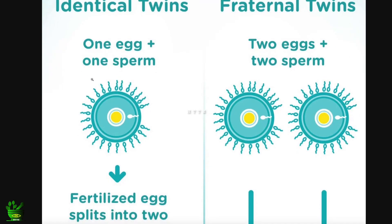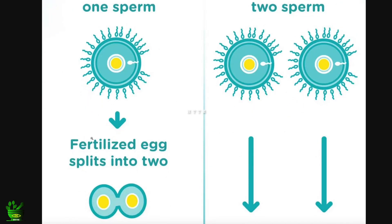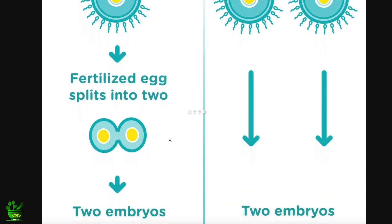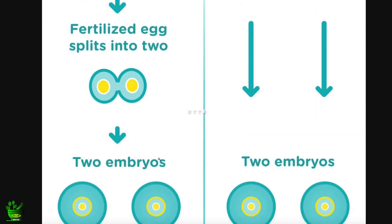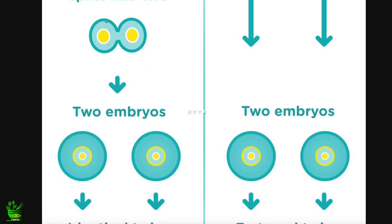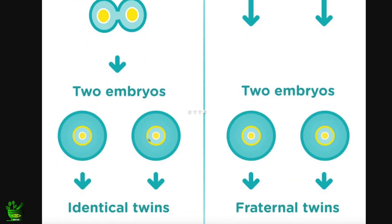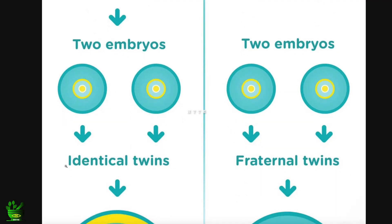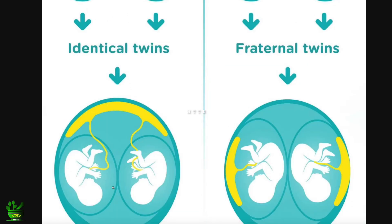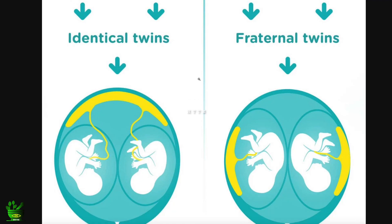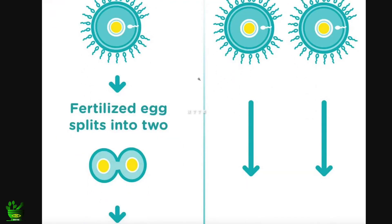Due to the fertilization of these two, one embryo is formed. Now this fertilized egg is going to split into two parts, meaning it will become two embryos. Here it is splitting, and here it has become two embryos — and these will form the identical twins. These twins share the same placenta but have different umbilical cords.